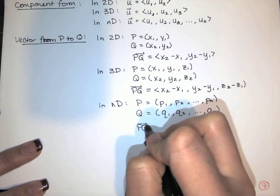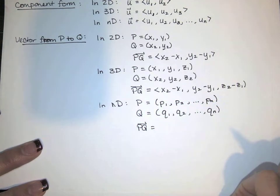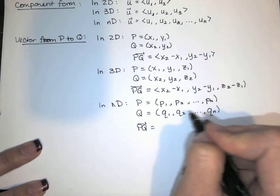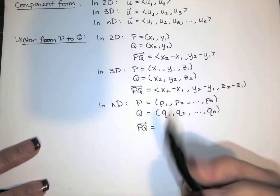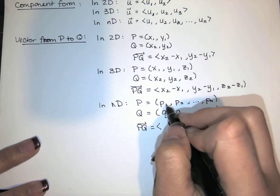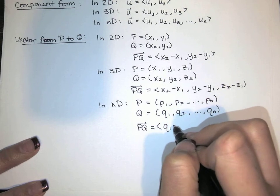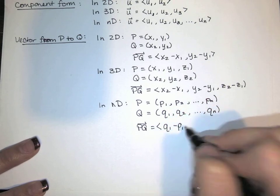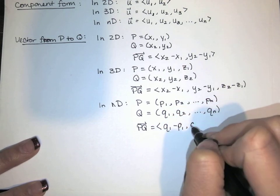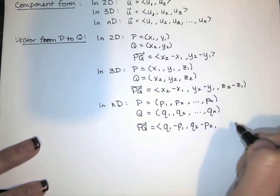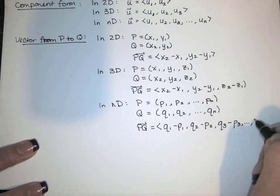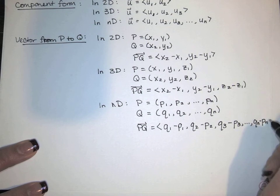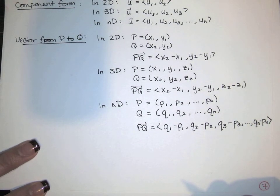So the vector pq starts at p and ends at q. We still do terminal minus initial. It looks a little different, the subscripts, but the idea is the same. I'm taking the first one, and I'm subtracting the first one. Terminal minus initial. And then I do terminal minus initial again. And then terminal minus initial again. And we keep going until we get n of them. Terminal minus initial again. And that's the vector pq in n dimensional space.